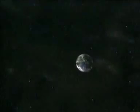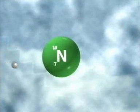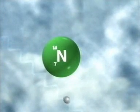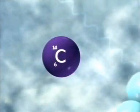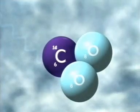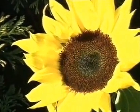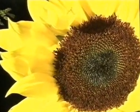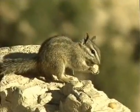Cosmic rays from outer space are constantly bombarding the Earth. Occasionally they collide with a nitrogen atom in the atmosphere to form carbon-14. The carbon-14 immediately combines with oxygen to form carbon dioxide. This radioactive carbon dioxide finds its way into plants, which are eaten by animals and humans.